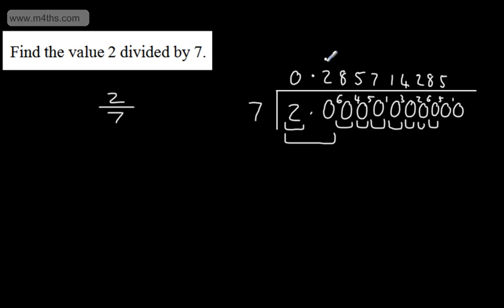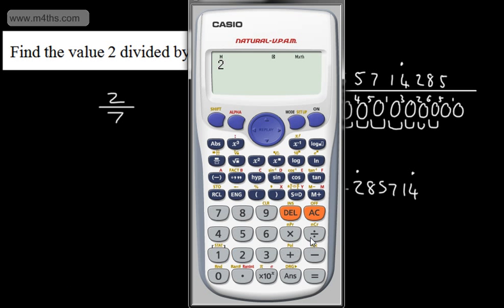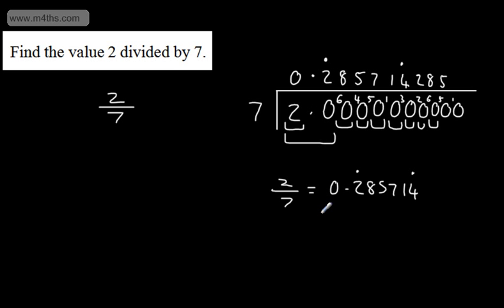We have what we call a recurring decimal. The pattern starts at 2, 8, 5, 7, 1, 4, and then it repeats. So if I keep going, I get 2, 8, 5, 7, 1, 4 again and again. We can say 2 divided by 7 is 0.285714 recurring. On a calculator, 2÷7 gives 0.285714 2857... and that keeps going. That's writing a division as a recurring decimal — it just keeps going.